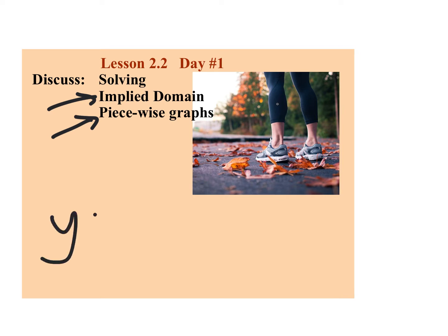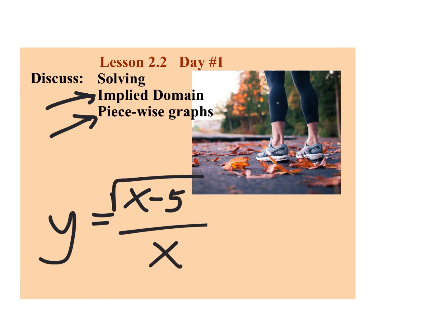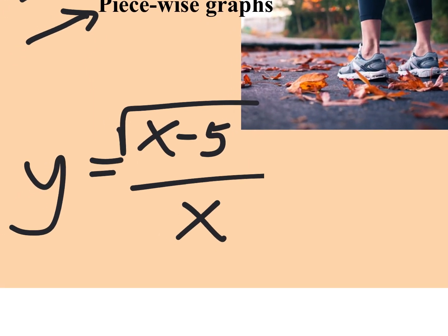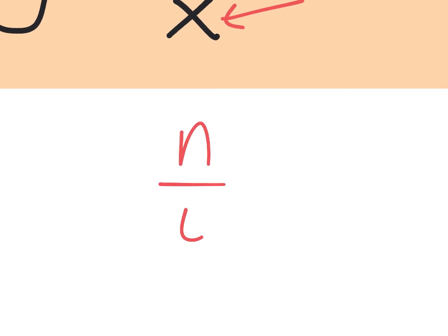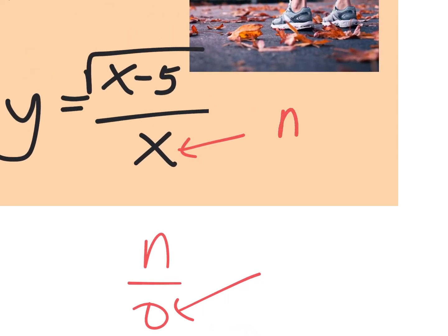When you have a math problem that has something like this — with an x on the bottom — and you don't state the domain, the domain for this is that x can't be zero. This is the most fundamental one of them all. You can't have a zero on the bottom of a function. If you take anything and divide it by zero, you can't do it. You're not allowed to have a zero down there. x cannot be zero. That's its domain.